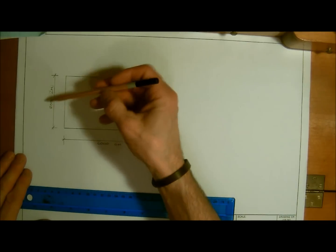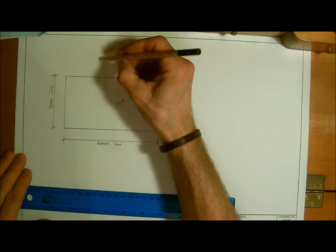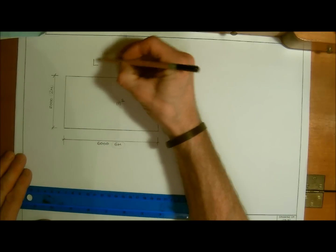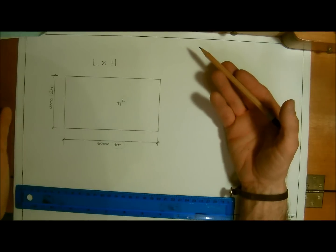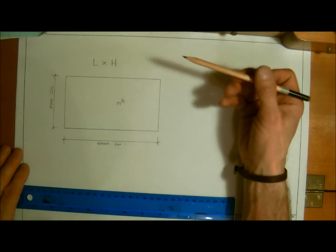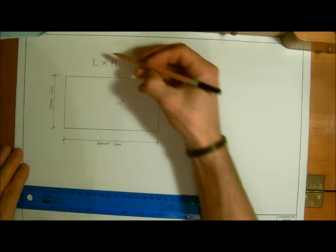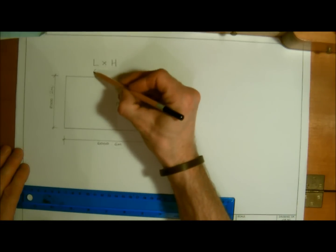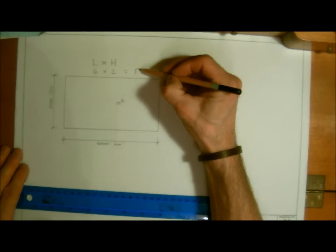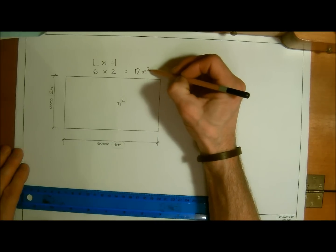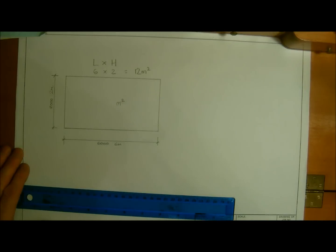And what we have here is obviously the formula is the length times the height. Or if it was a floor area it would be the length times the width. So here we've got the length that's six meters times two meters of height equals obviously twelve meters squared. Simple as that.